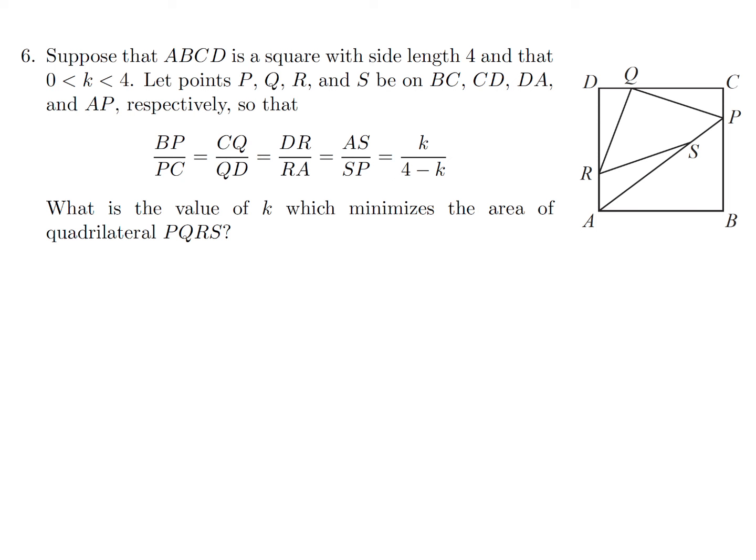Suppose ABCD is a square with side length 4 and K is between 0 and 4. Points P, Q, R, and S are on BC, CD, DA, and AB respectively, such that BP over PC equals CQ over QD equals DR over RA equals AS over SP equals K over 4 minus K. What is the value of K that minimizes the area of quadrilateral PQRS?